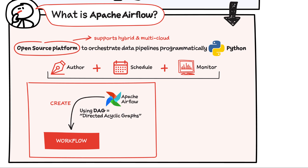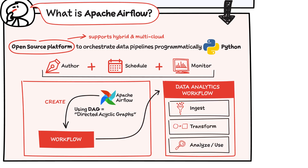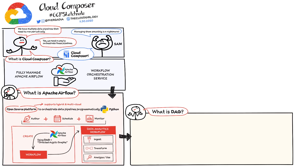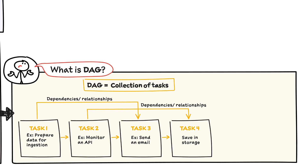You create your workflows in Apache Airflow using DAGs, or Directed Acyclic Graphs. These workflows include ingesting data, applying transforms, and analyzing them. A DAG is really a collection of tasks with dependencies and relationships with each other.